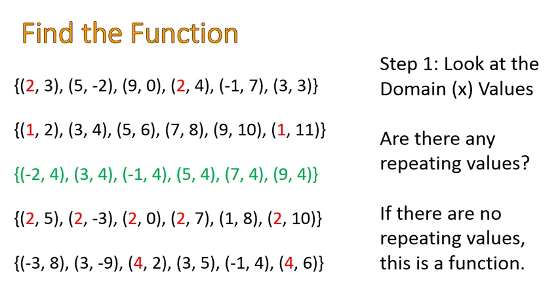And then you'll notice that there are repeating x values in the last two lists. So if you're given a list of ordered pairs like this, you can find that if it is a function, if they have no repeating x values. Or in other words, no repeating domain values or no repeating input values. That's how we determine if it's a function.